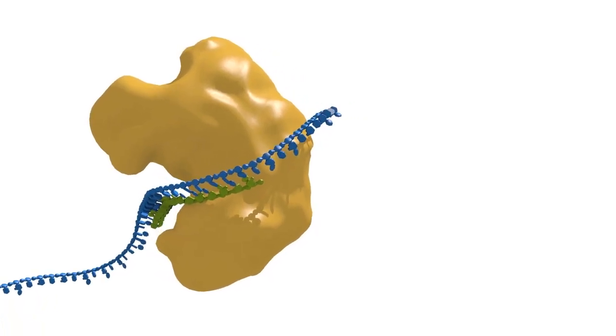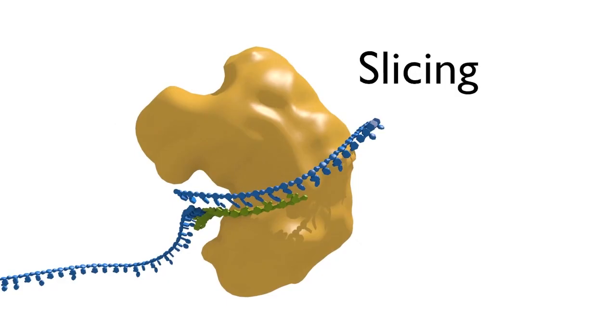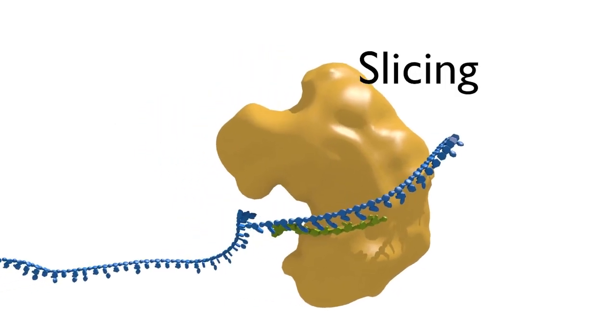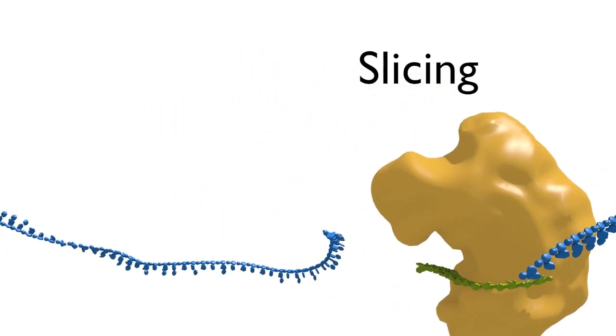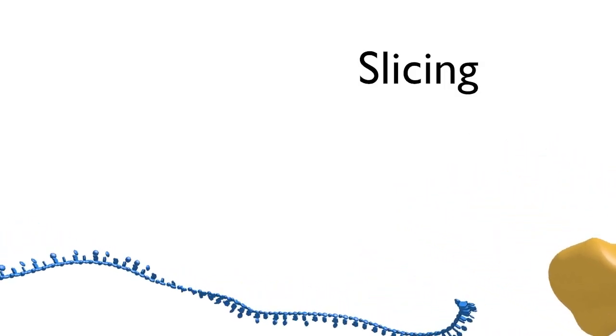The cleavage reaction is referred to as slicing. Products of the slicing reaction are thought to immediately become targets for the exosome and other standard RNA decay pathways in the cell.